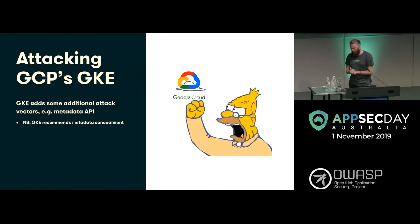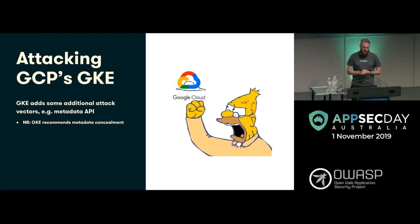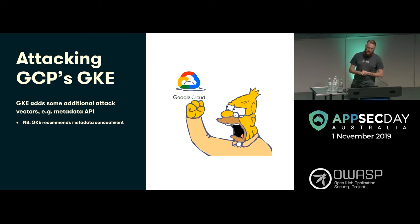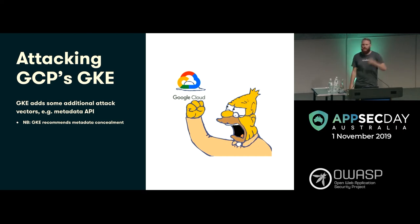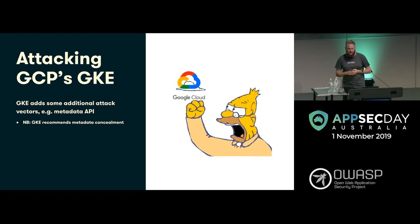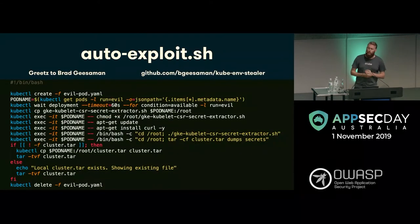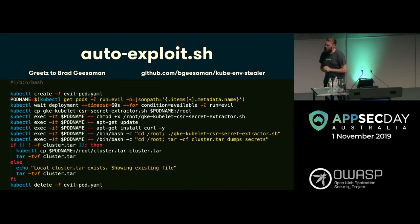A little bit more background, particularly around GCP. Different cloud providers all have something similar — they introduce some extra attack surface via the metadata API. GCP, while they have a recent feature called metadata concealment, not a lot of people turn it on. If you get a container that accesses host networking, you can get attributes of the underlying node from within the container. The privilege escalation pathway: from a container with host networking enabled, talk to the metadata API, get the ability to say 'I am the node,' then talk to GCP directly or the Kube API server, and from there possibly extract secrets from other nodes and other containers running on that same node. There's great tooling around this — greets to a guy called Brad Giesemann.